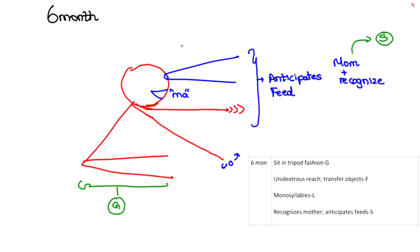Monosyllables like 'ma' is language. Unidextrous reach and transferring of objects comes under fine motor. Let's recap: a baby sitting in a tripod, transferring objects, recognizing mother and anticipate feed, calls her mother by 'ma' and unidextrous reach.